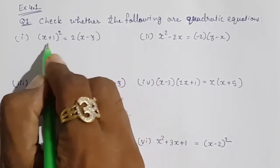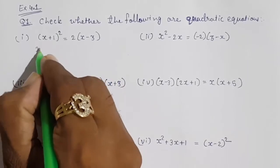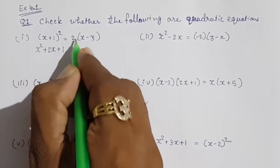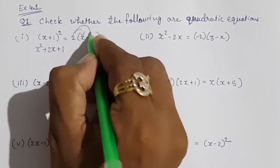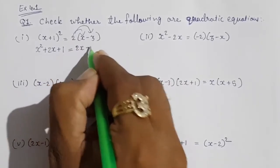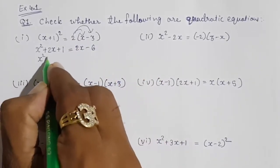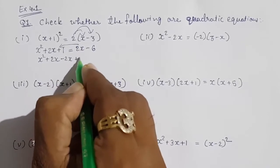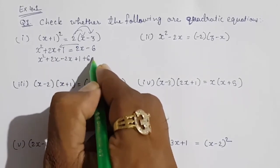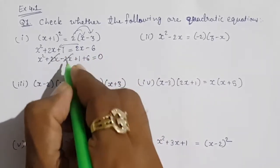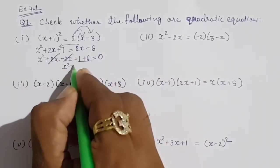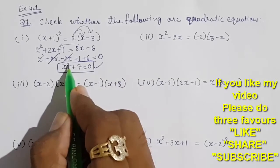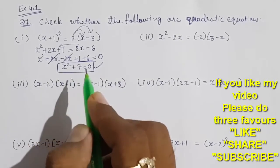x plus 1 whole square. We are going to use the identity (a+b)² = a² + 2ab + b², so x² plus 2 into x into 1 means 2x, plus 1. This 2 will get multiplied with both numbers, so it will become 2x minus 6. Taking all numbers to one side: x² plus 2x, this 2x will become minus 2x, plus 1, this minus 6 will go that side and become plus 6 equals to 0. This will get cancelled and your answer will be x² + 7 = 0. The highest power is 2, so this is a quadratic equation.